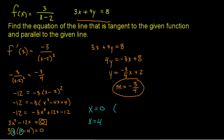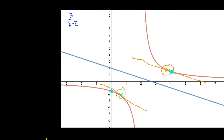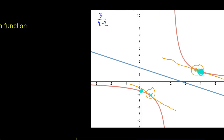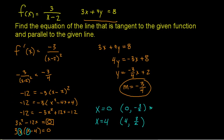I also need the y coordinates. I have x equals 0 and x equals 4. A function gives you the y coordinate. If I plug 0 into my function, I get negative 3 halves. If I plug 4 into my function, I get positive 3 halves. So there are my two points of tangency: (4, 3 halves) and (0, negative 3 halves). The slopes are going to be negative 3 fourths, because all of these lines have to be parallel — they all have the same slope.